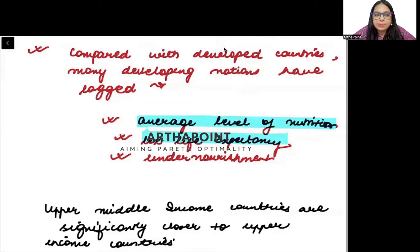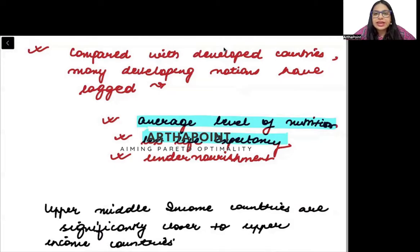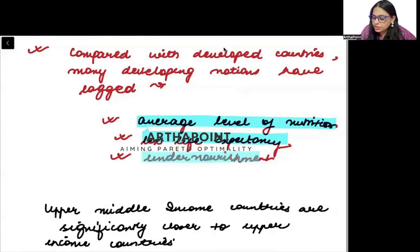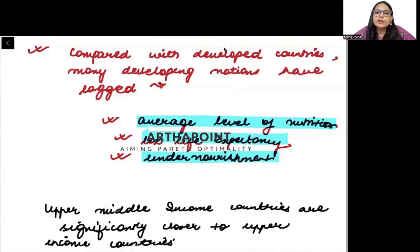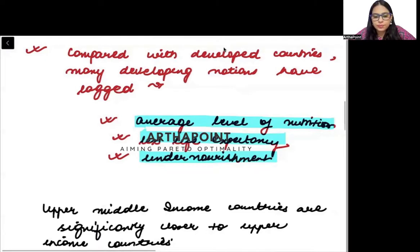A person born in a developing nation doesn't get good healthcare, doesn't get good nutrition, and the air that they are breathing is very full of diseases and pollution. Under-nourishment is also an issue — in a developing nation, the nutrition that the individual gets will also not be good.